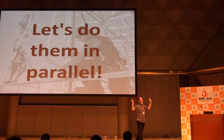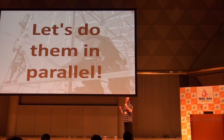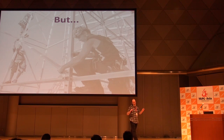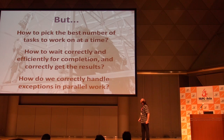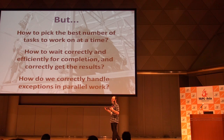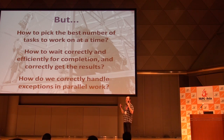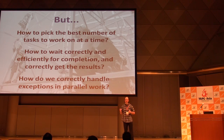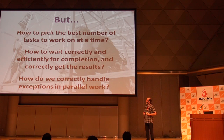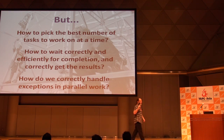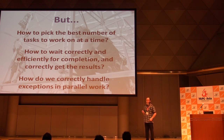Here's a simple example: a program that slurps in two files, decodes them as JSON, and compares them for snapshot equivalence. What I notice is that there are two tasks happening with no dependencies between them, so I can do them in parallel. But of course there are always considerations: how many tasks can we do at the same time? It depends on the hardware and what else is happening. If we have a very busy system we shouldn't create lots of threads; if we have eight idle cores we can make good use of them. We also need to correctly wait for results and handle exceptions from parallel tasks.